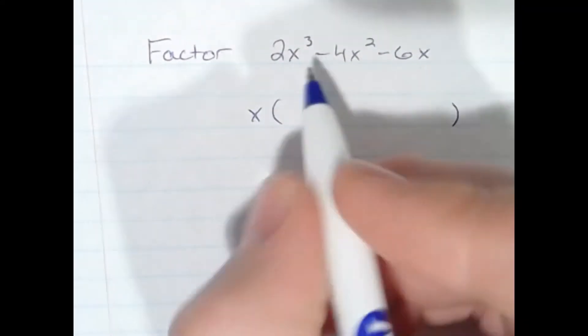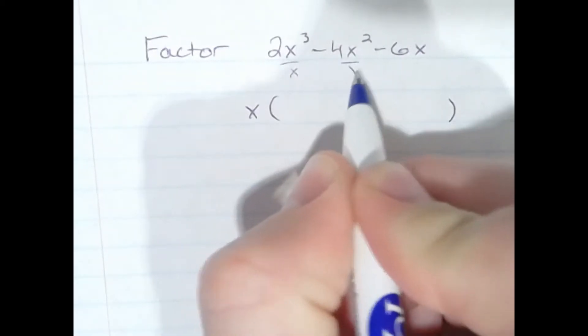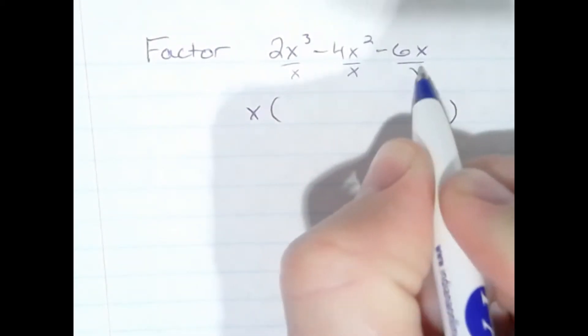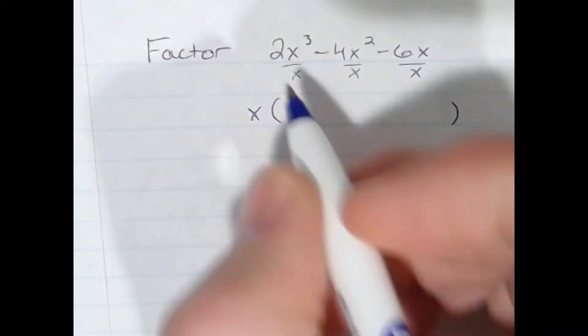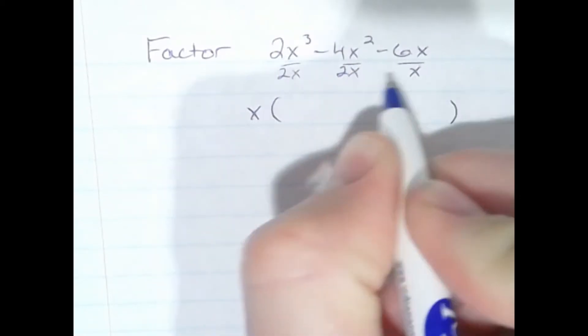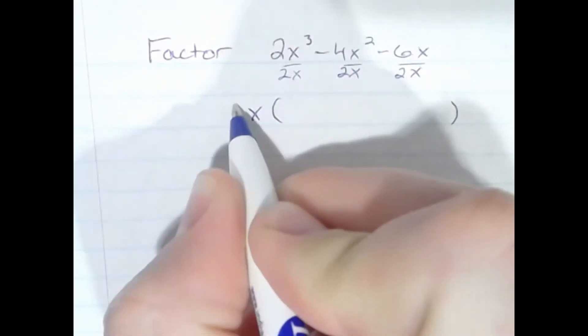Factoring out or dividing out an x from each term will simplify the problem. But we also notice I can not only take out an x, but there's a 2, a 4, and a 6. We can divide out or factor out a 2x along with it.